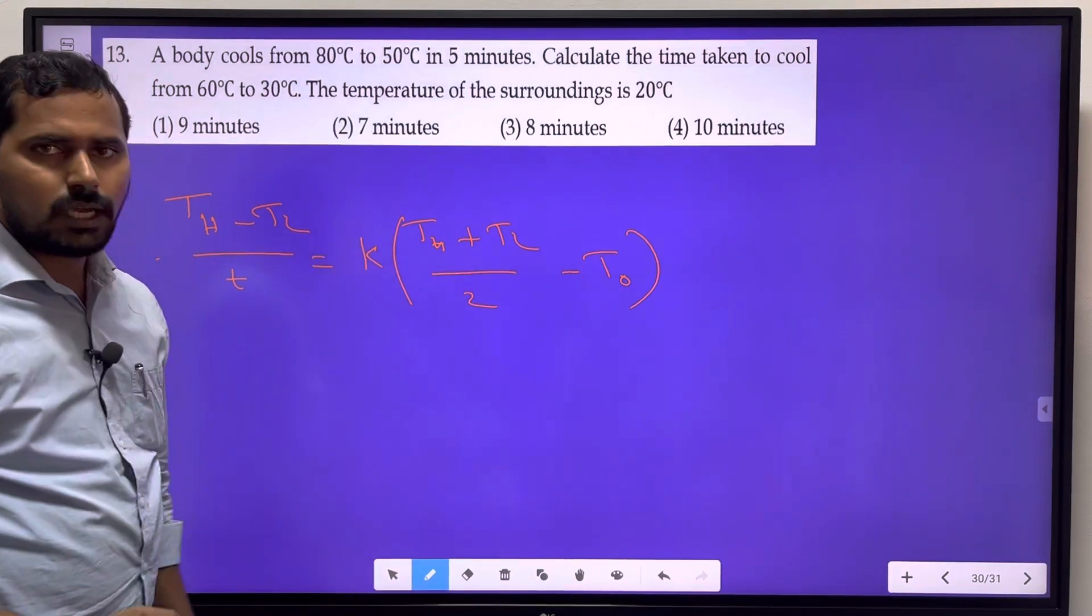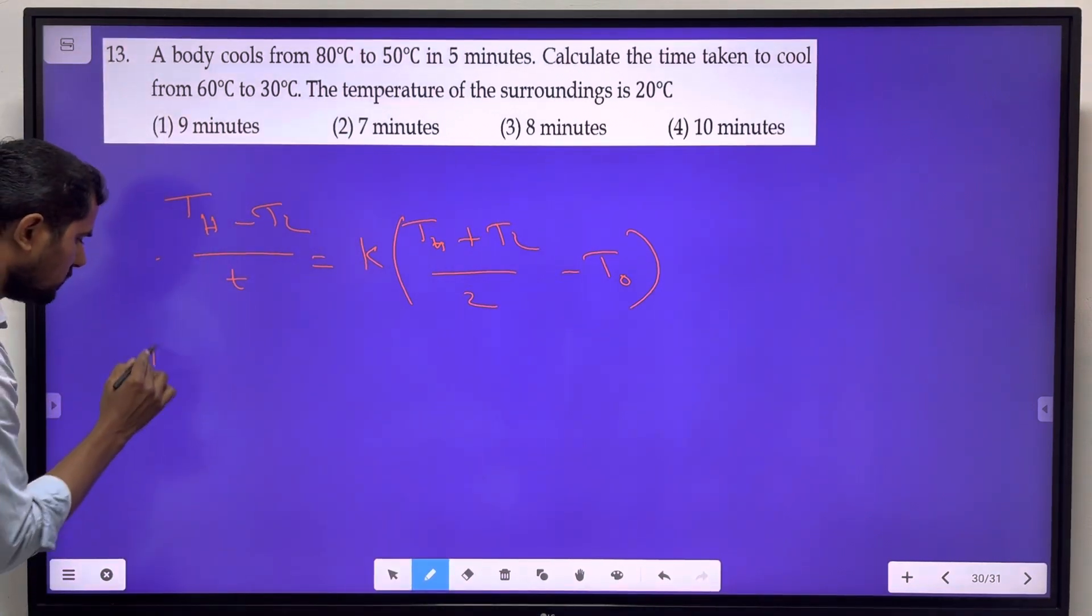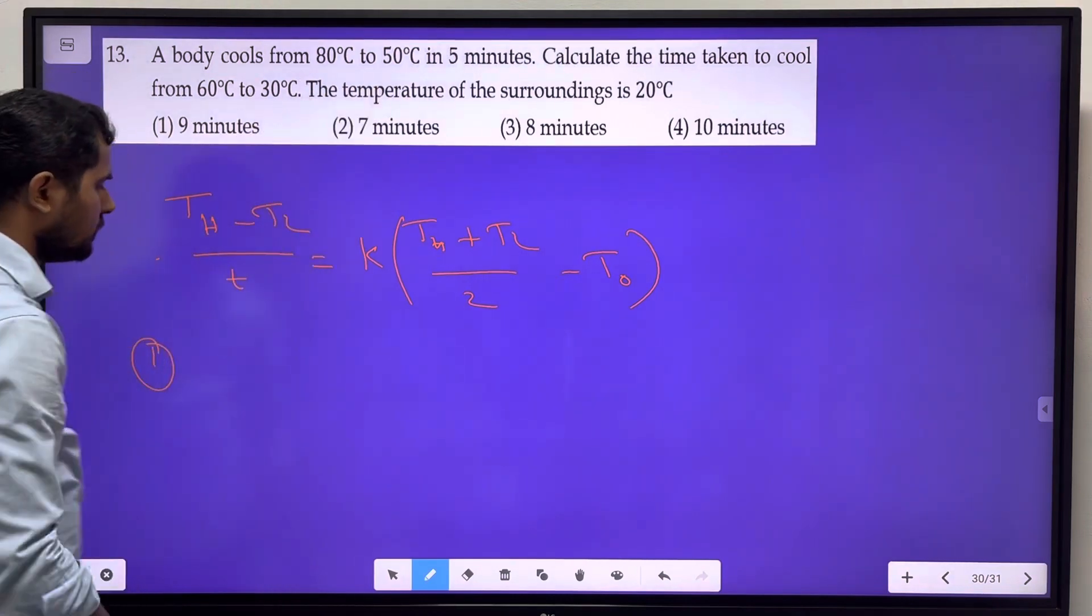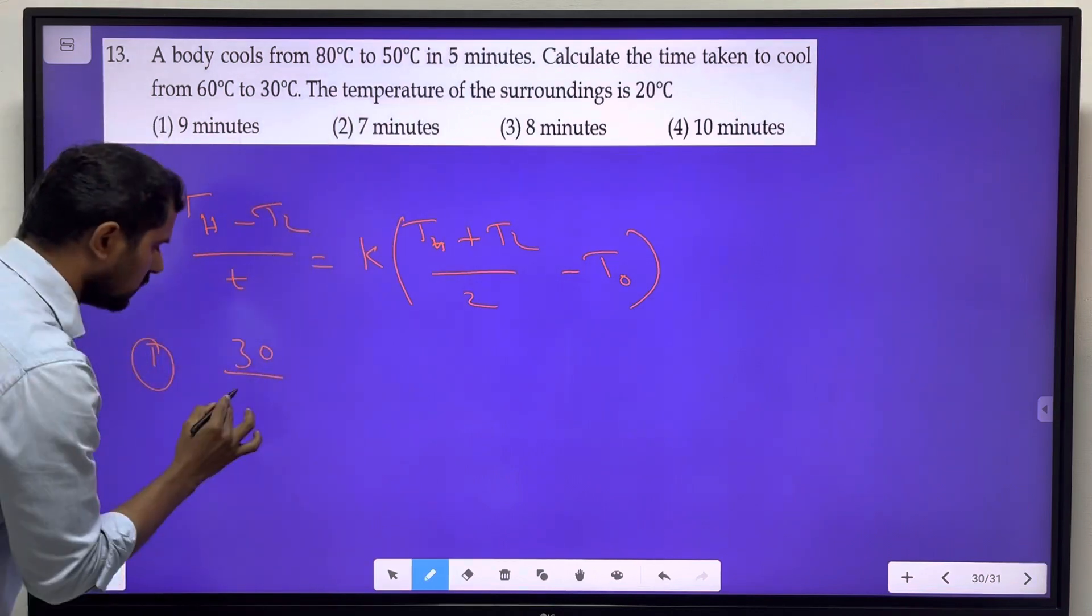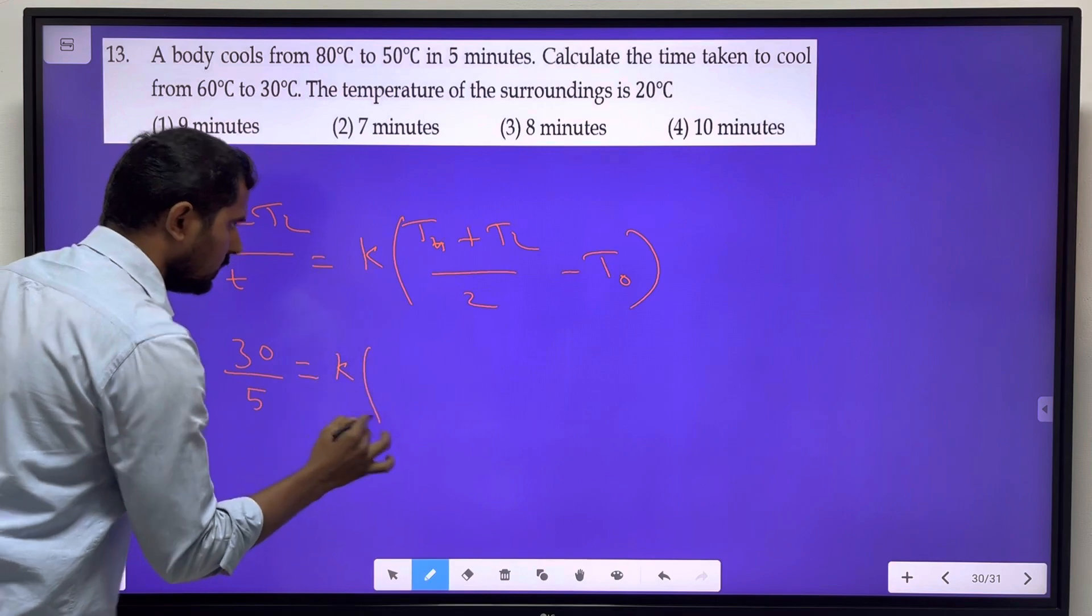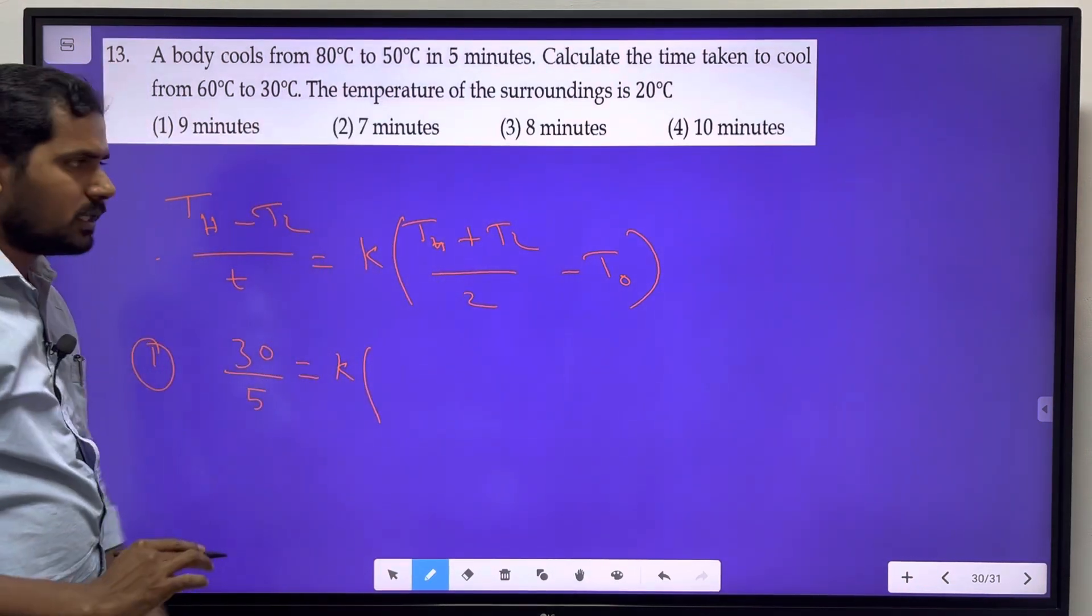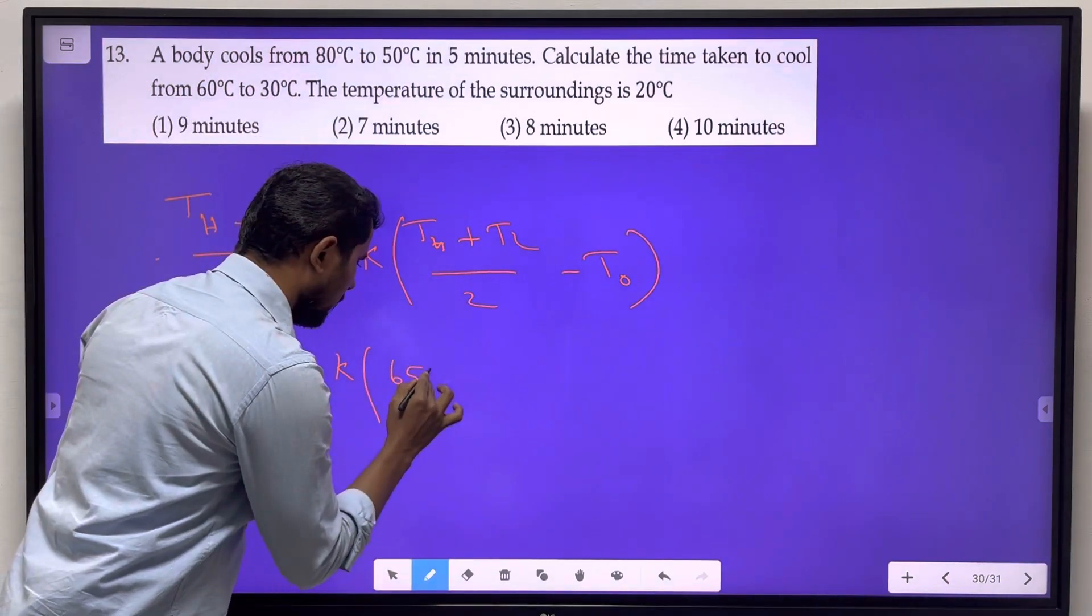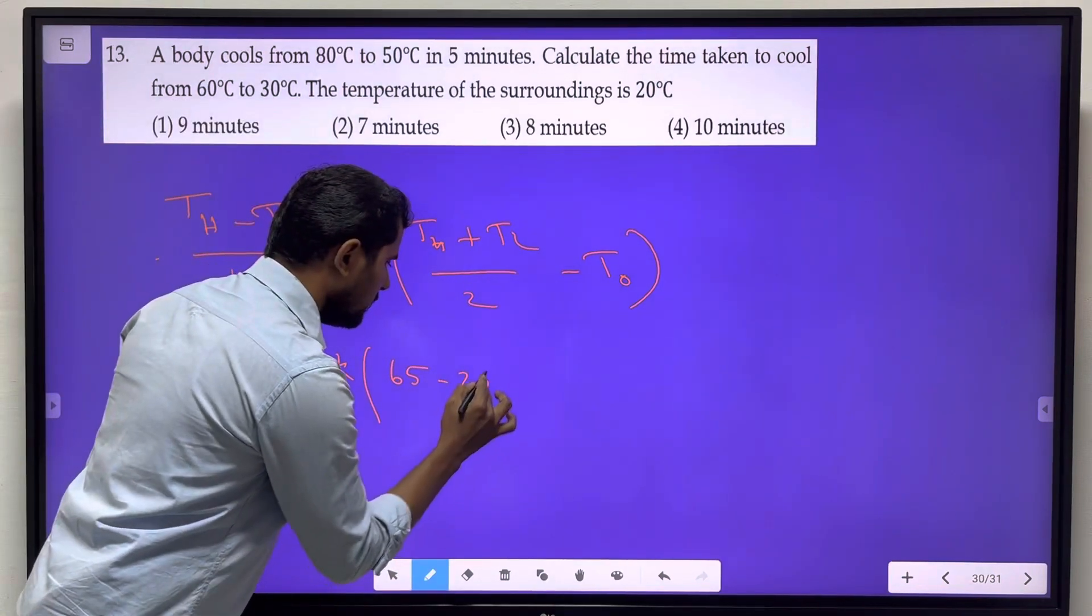We have two situations. In the first situation, TH minus TL equals 80 minus 50, which is 30. Time is 5 minutes. We will find K: (TH + TL)/2 - T0 equals (80 + 50)/2 - 20, which is 65 minus 20 equals 45.